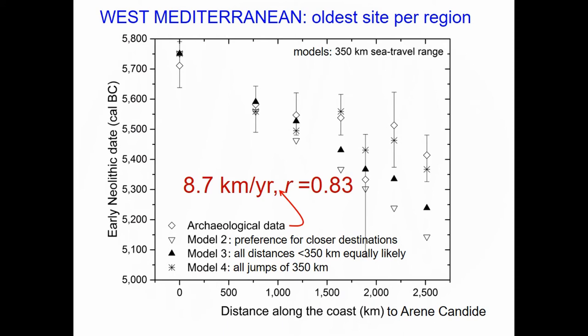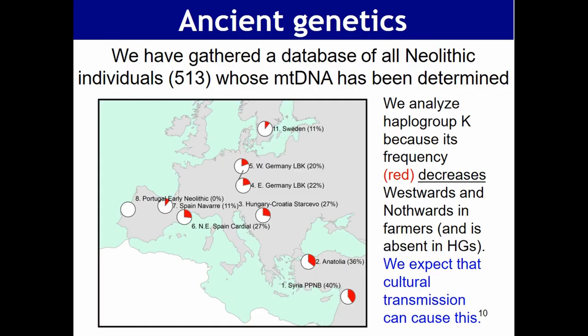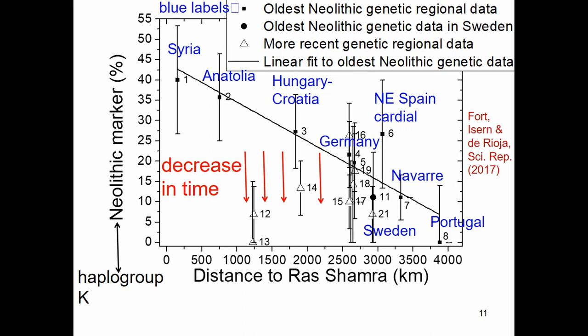Turning to ancient genetics, we gathered a database of 513 individuals whose mitochondrial DNA has been determined. We analyze haplogroup K, whose frequency — shown in red — decreases westward and northward in farmers and is absent in hunter-gatherers. This is what we expect if there is demic diffusion with some degree of cultural diffusion: places further from the origin still have more hunter-gatherers, so the cultural transmission effect is stronger and the Neolithic marker decreases. This is known as the genetic cline.